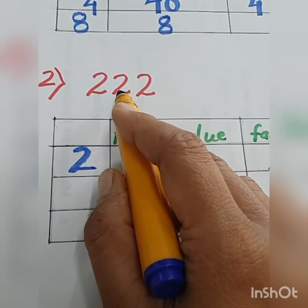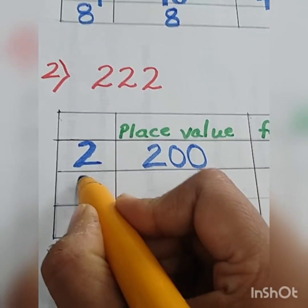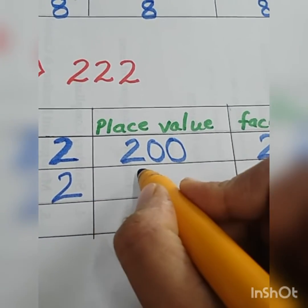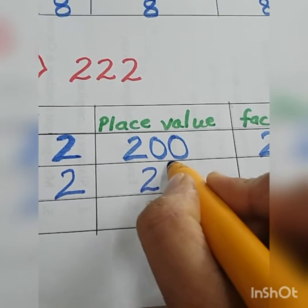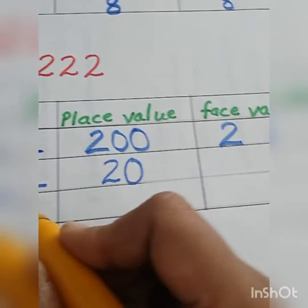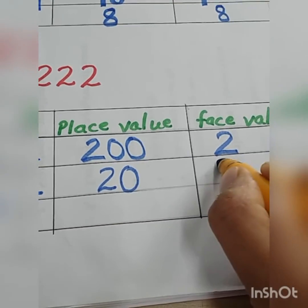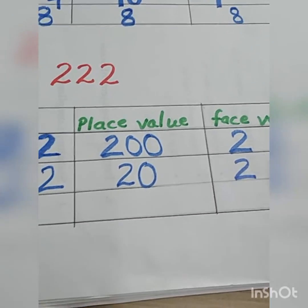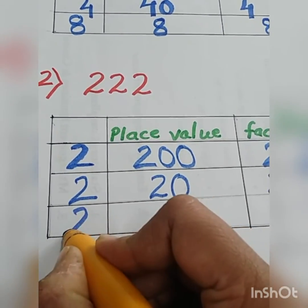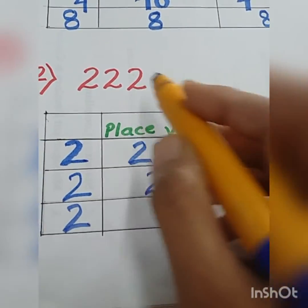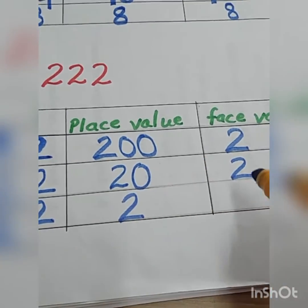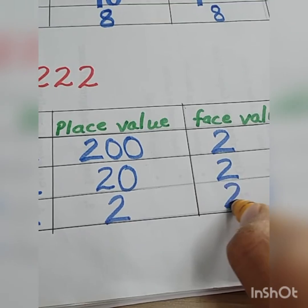Now this next 2 is at tens place, so the place value of this 2 will be 2 tens, that is 20. And the face value, as it is, is 2. Now the last 2 is at ones place, so the place value will be 2 and the face value — the number itself — is also 2.